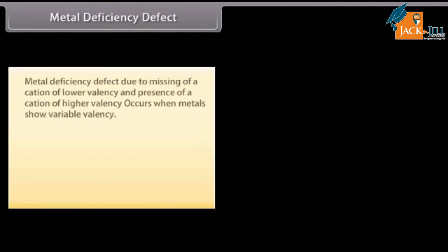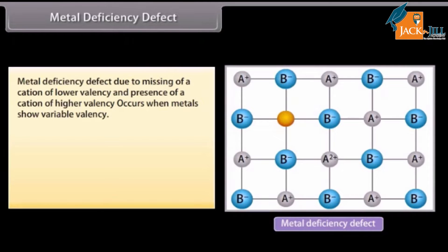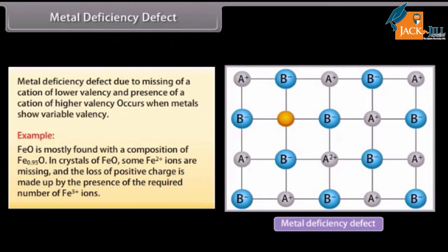Metal deficiency defect: This occurs due to the missing of a cation of lower valency and the presence of a cation of higher valency, and occurs when metals show variable valency. For example, FeO is mostly found with a composition of Fe₀.₉₅O. In crystals of FeO, some Fe²⁺ ions are missing and the loss of positive charge is made up by the presence of the required number of Fe³⁺ ions.